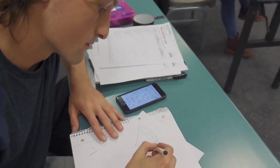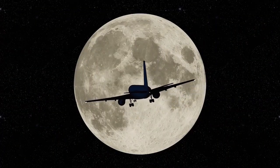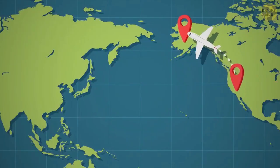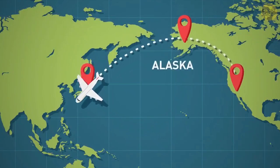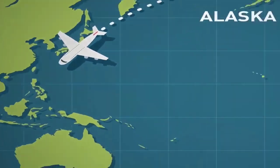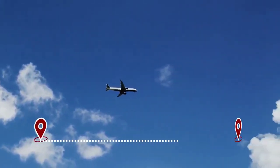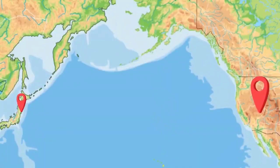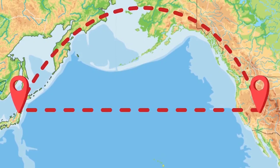Let us start with the scientific reasons. Usually, a flight going to China from the US prefers to take a curvy route that passes through Alaska and Siberia. But why a curvy route? Wouldn't it be shorter and better if the planes took a straight route? On a flat map, when we compare both the routes, the straight one is shorter, but in reality, it isn't.